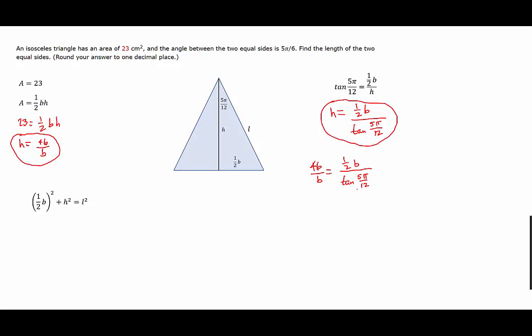Setting the two height expressions equal: 46/b = (b/2) / tan(5π/12). Cross multiplying gives one half b squared equal to 46 times the tangent of 5π/12. Multiplying by 2 and taking the square root gives b equal to the square root of 92 times the tangent of 5π/12. Plugging into our height formula gives h equal to 46 over the square root of 92 times the tangent of 5π/12.